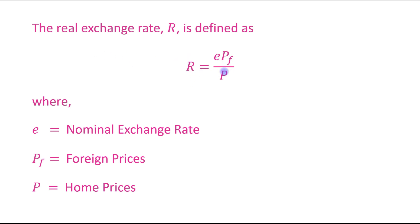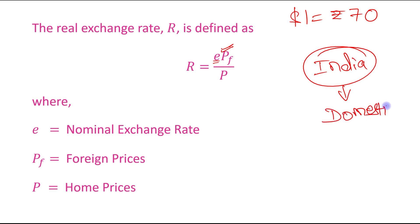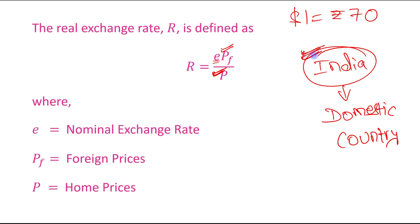The real exchange rate can be defined in this form. The nominal exchange rate — for example, dollar 1 equals rupees 70 — is E. If we assume India as the domestic or home country, then foreign prices means the prices in the United States, and home prices means the prices in India.